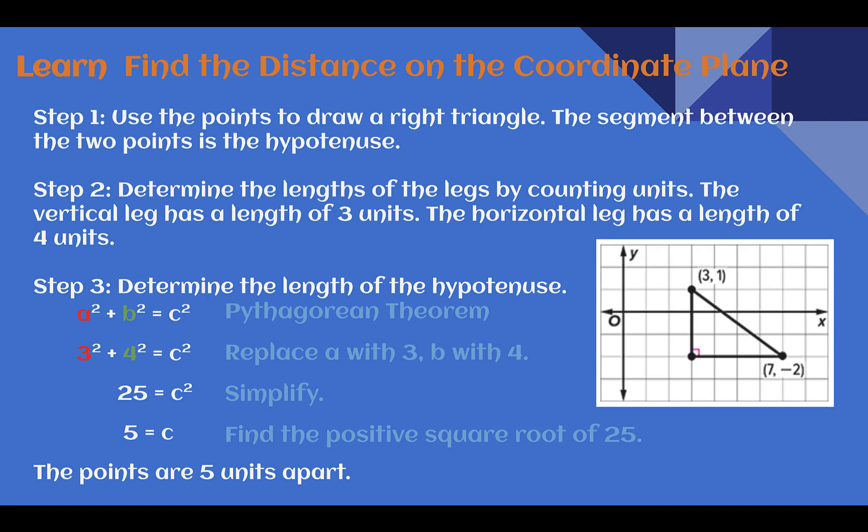Let's learn. Find the distance on the coordinate plane. Here we see some steps to find the distance between two points on a coordinate grid. So first, we're going to use the two points and draw a right triangle. The segment between the two points becomes the hypotenuse. So here we can see in our picture we had two points, 3, 1 and 7, negative 2. First, we connected them to make our hypotenuse, and then we made a right triangle out of it. This process, making a triangle and connecting, is similar to when we were trying to find slope.